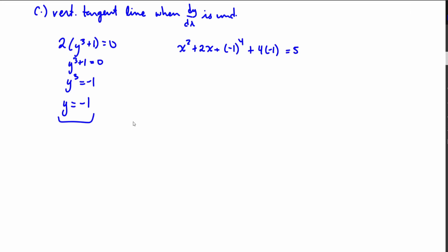And so then what I'm going to do is I am just going to solve for x here. So I'm going to get x squared plus 2x, that's going to be plus 1 minus 4, so that's going to be minus 3 equals 5. And I'm going to solve this by setting this equal to zero and factoring, so x squared plus 2x minus 8 equals 0.